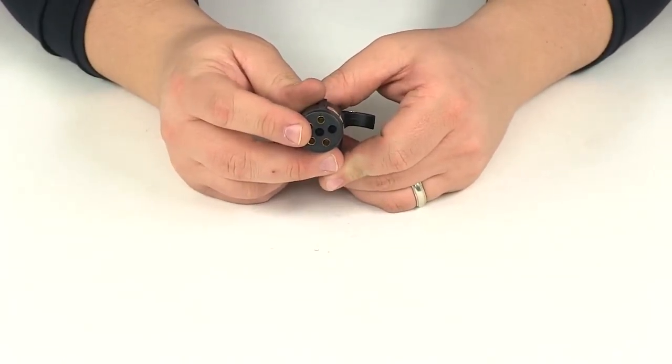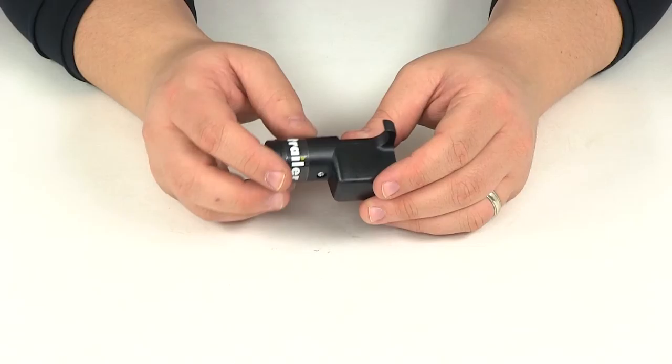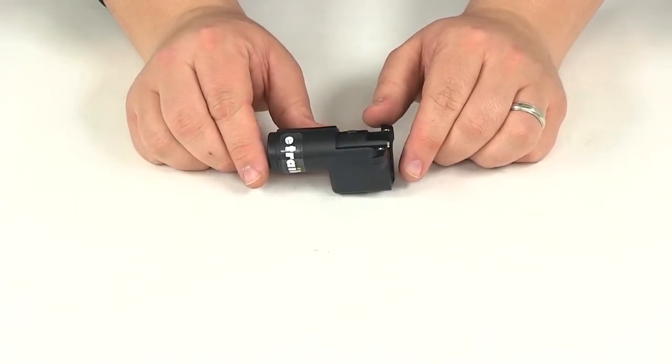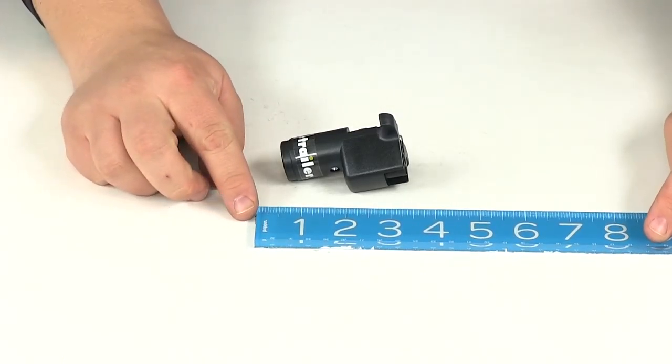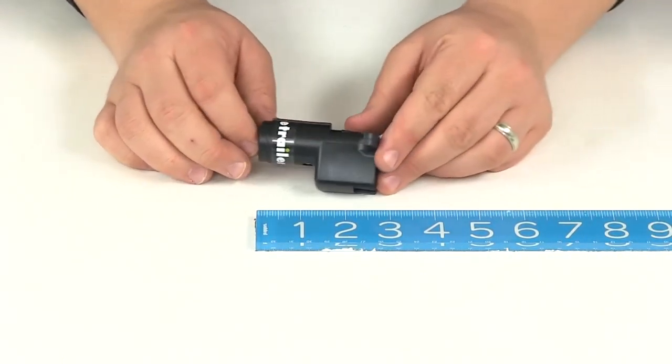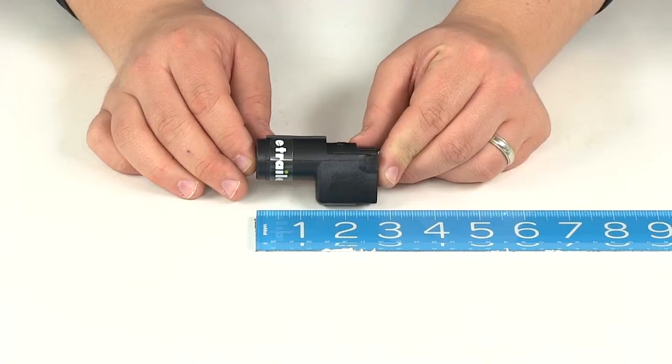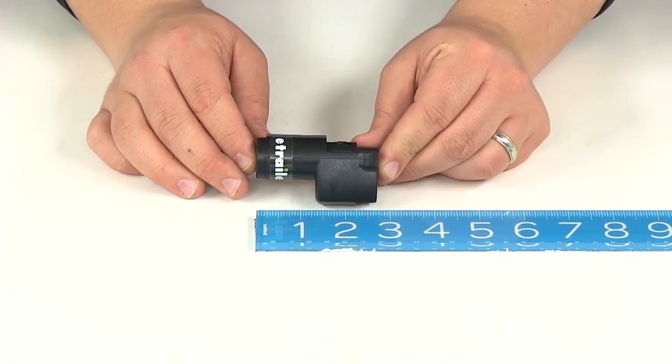This is going to be designed for vehicles with six-pole connectors. If we take a measurement of the overall length, measuring from edge to edge, this is going to give us a measurement of about two and three-quarters of an inch.